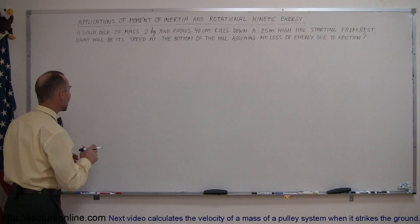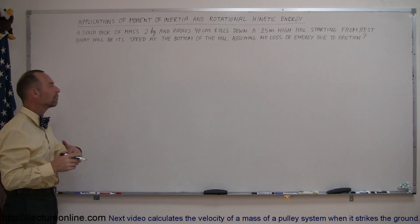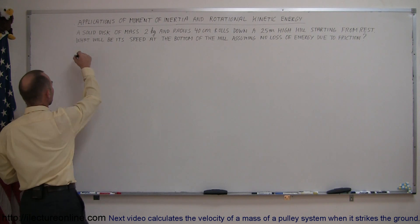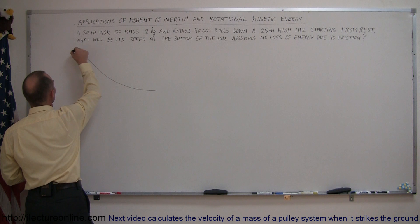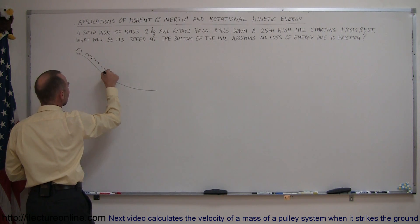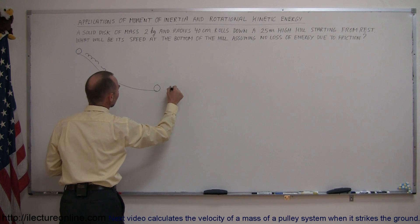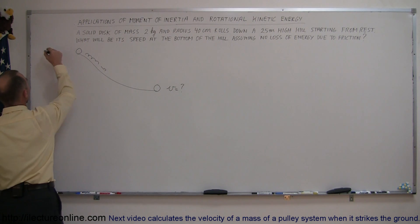Let's imagine we have a hill and it doesn't have to be a hill of constant steepness, it can be a hill of any kind of shape. Let's say we have a wheel that starts from the top and as it rolls down the hill, when it gets to the bottom what is v equal to? We're also told that the mass of the disk is equal to 2 kilograms and that the radius of the disk is equal to 40 centimeters.